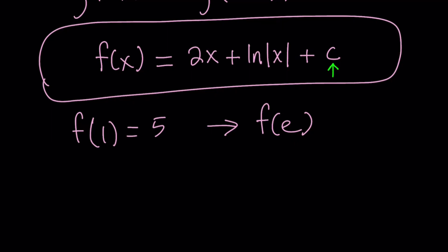So c is a general constant. But in this particular case, for x equals 1, it is going to have a definite value. So let's go ahead and replace x with 1 in f of x.